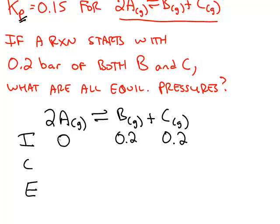0 is the smallest pressure or the smallest concentration you can have, because there's no such thing as a negative pressure or a negative concentration. So we know that the change in chemical A has to increase. If the left-hand side is increasing, the right-hand side must decrease.